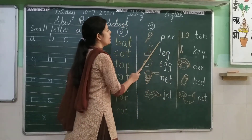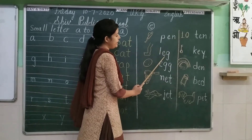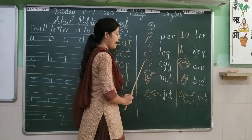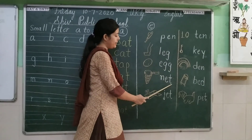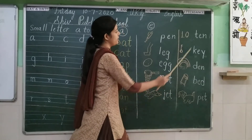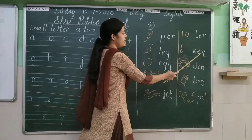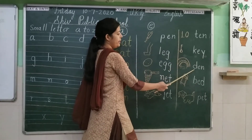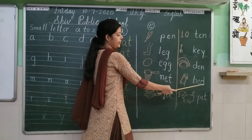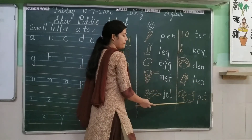Let's repeat again: P-E-N, pen. L-E-G, leg. E-G-G, egg. N-E-T, net. J-E-T, jet. P-E-N, pen. K-E-Y, key. D-E-N, den. B-E-T, bet. P-E-T, pet.